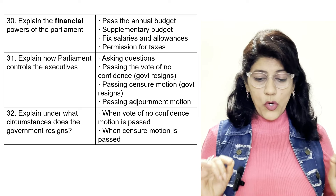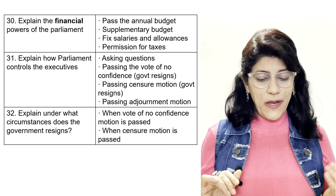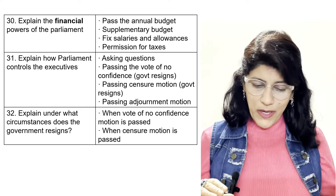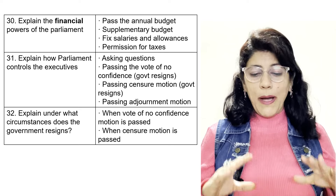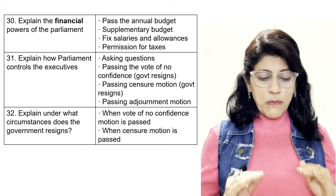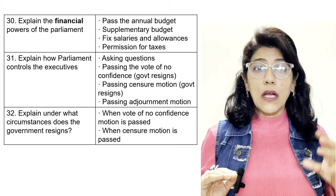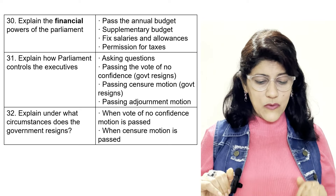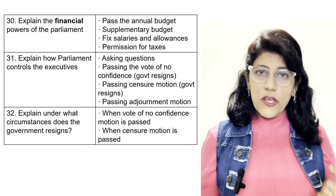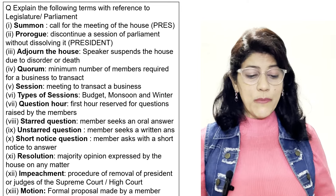Financial powers of Parliament: pass the annual budget and supplementary budget, fix salaries and allowances, and give permission for taxes. How does Parliament control the executive? By asking questions, passing vote of no confidence (after which the government has to resign), passing censure motion (government has to resign), and passing adjournment motion to lay aside all other business. Under what circumstances does the government resign? When vote of no confidence or censure motion is passed.